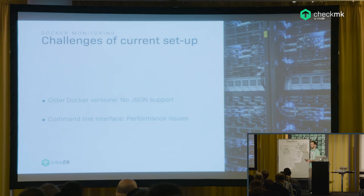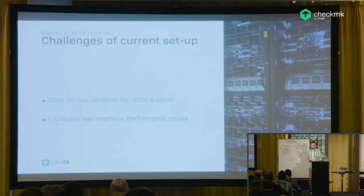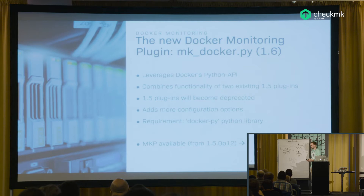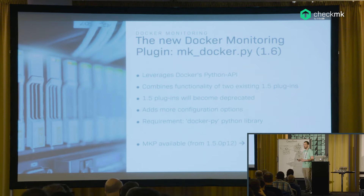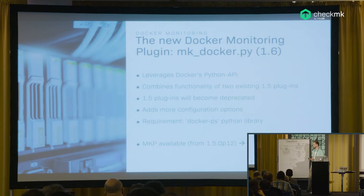In addition, for specific commands like Docker volumes, there are performance issues. We need to make sure we can configure whether or not to get that information. Because of these issues, in version 1.6 there's going to be a new Docker plugin. It will definitely solve the JSON problem and therefore the version compatibility problem. The plugin uses the Python API, so we no longer need the command-line interface. From the user's perspective, it's more convenient: the two older plugins are deprecated and there's only one Docker plugin that provides all different configuration options.